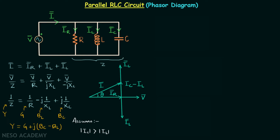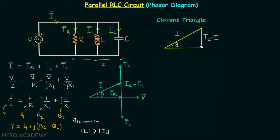Let's talk about the current triangle. The hypotenuse represents the magnitude of the net current, the perpendicular is equal to IC minus IL, and the base is equal to IR.